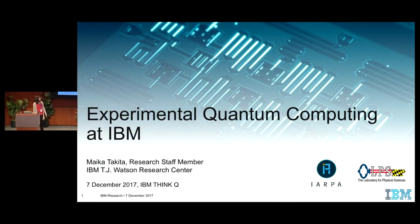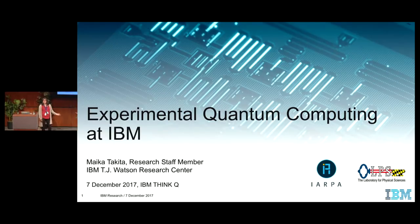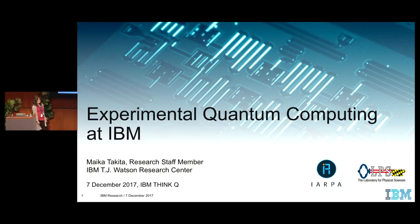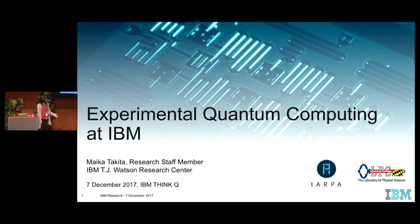The title of my talk is Experimental Quantum Computing at IBM. It's a very generic title, but what I wanted to talk about is the type of devices that we have and use at IBM, focusing on what type of controls we use to implement quantum gates, and also different methods that we use to characterize and understand our quantum system. That would help us improve our devices and move forward in terms of trying to use this as a good quantum computer.